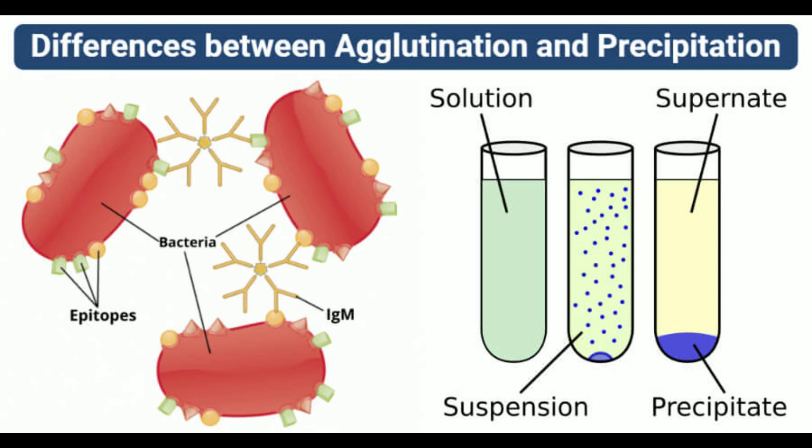Agglutination reactions might require minutes to hours for completion, while precipitation reactions might occur in hours to days. The end products of agglutination appear as large visible aggregates, as do those of precipitation. Agglutination reactions are useful in blood grouping, while precipitation reactions are useful in quantitative analysis and pigment formation.